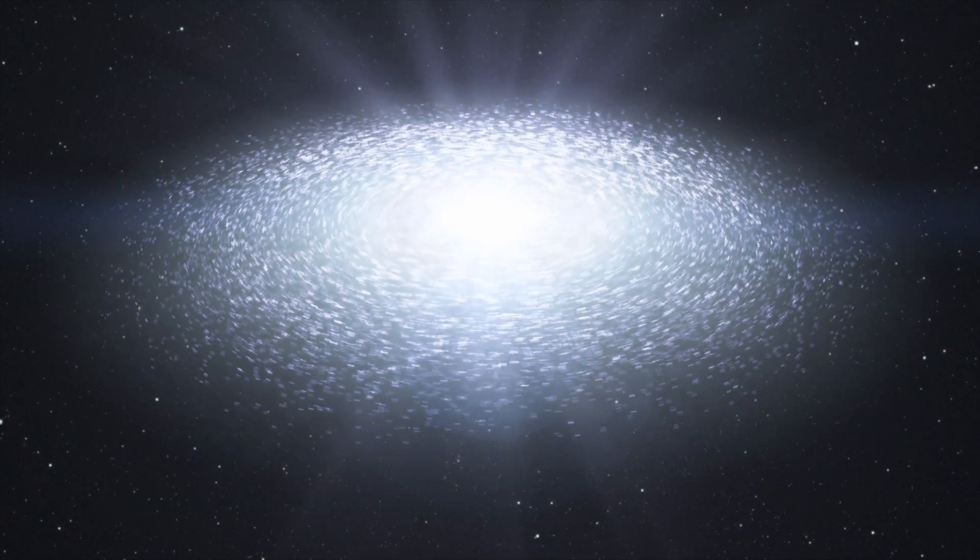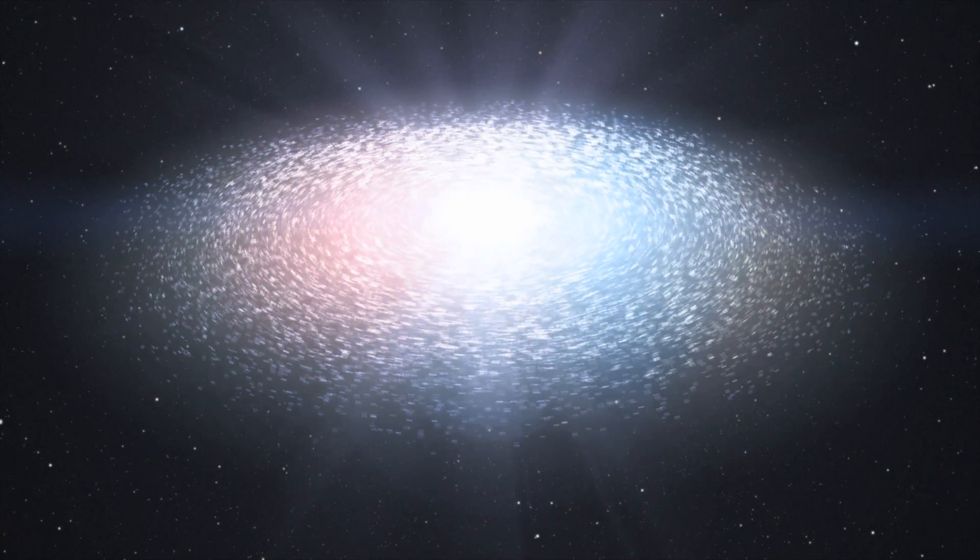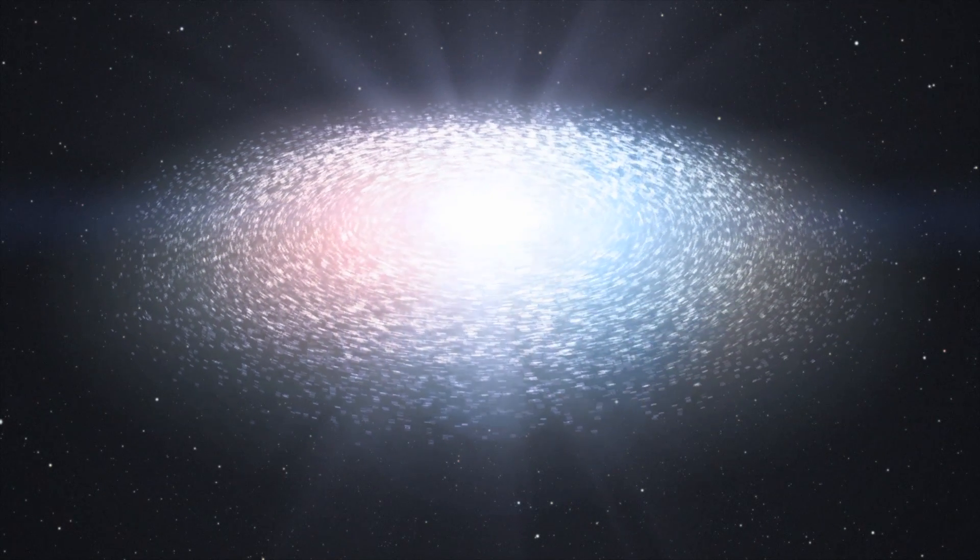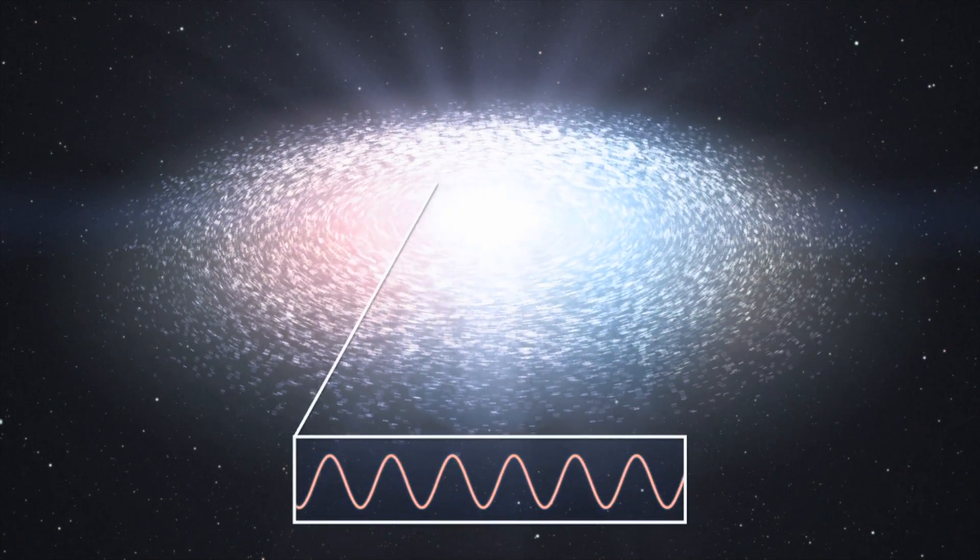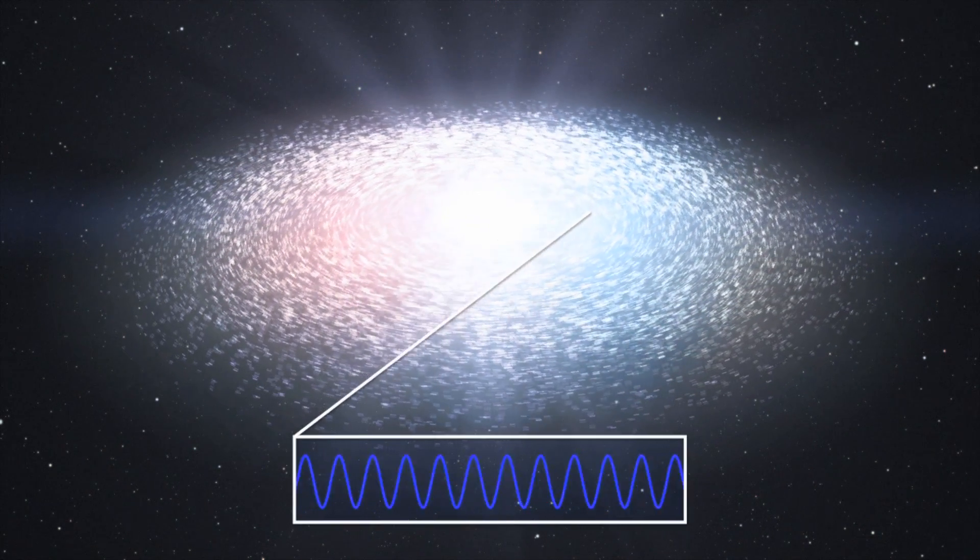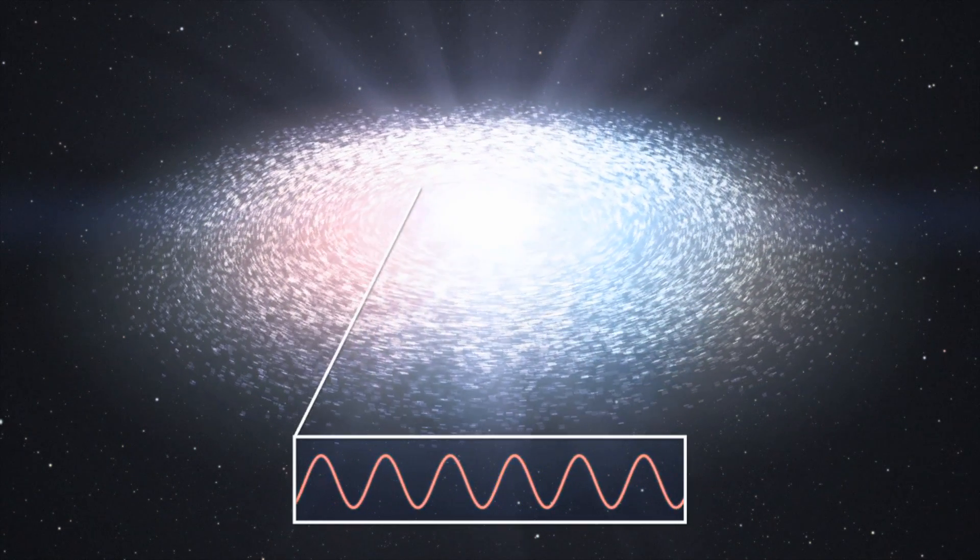When Hubble observed the disk at the center of a nearby galaxy, Messier 87, the astronomers saw that its color was not quite the same on both sides. One side was shifted towards blue and the other towards red. And this told the scientists that it must have been rotating very quickly. This is because the wavelength of light is changed by the motion of an object emitting it.